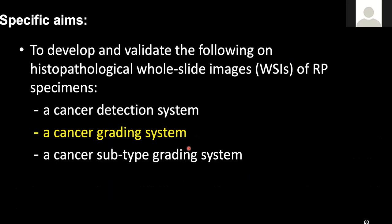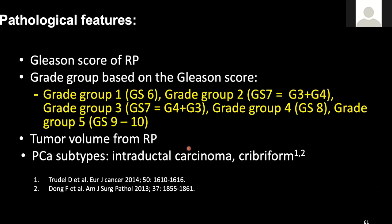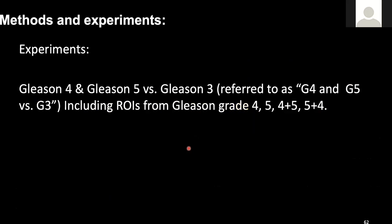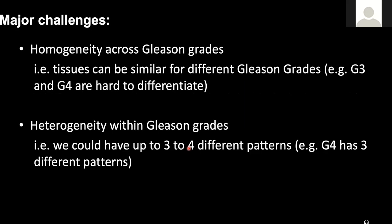Moving to the second specific aim: cancer grading. As a reminder, we want quantitative reporting of the presence of high-grade cancer for borderline cases. In our experiment, we designed the system to differentiate high-grade versus low-grade. The common grades are Gleason grade 4 and 5 as high-grade, and Gleason grade 3 as low-grade. In clinical practice it is very rare to have grade 1 or 2, so normally we have grades 3 to 5, where grade 3 is low-grade and grades 4 and 5 are high-grade.